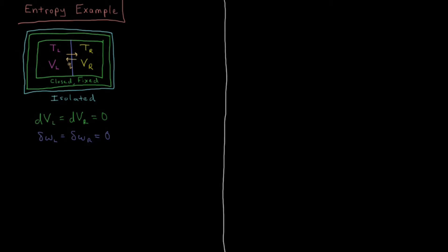Let's see which direction the second law of thermodynamics predicts that heat will flow when we have the following setup. We have a closed system on the left with temperature TL and volume VL, and another closed system on the right with temperature TR and volume VR. There's a fixed partition separating these two, so they can exchange energy but cannot do work on each other. The only way they can exchange energy is heat. Outside this system, they are completely isolated.